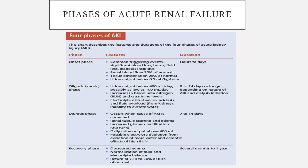The different phases of acute renal failure begin with the onset phase. The main features are common triggering events like significant blood loss, burns, fluid loss, and diabetes insipidus. Renal blood flow is at 25% of normal, tissue oxygenation is at 25% of normal, and urine output falls below 0.5 ml per kg per hour. This onset phase can last for a duration of a few hours to days.